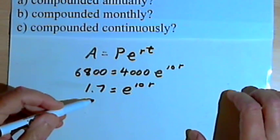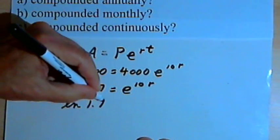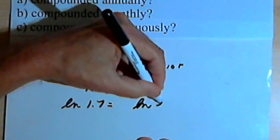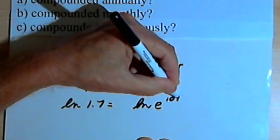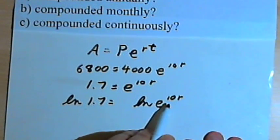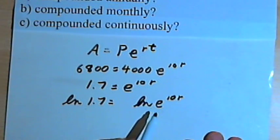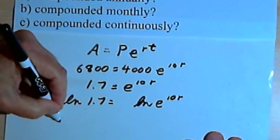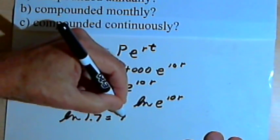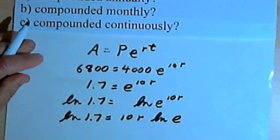Now we'll take the natural logs. So we're going to have ln, the natural log of 1.7 equals the natural log of e raised to the 10r. I can take this exponent, the 10r, and using the exponent rule that I have for logarithms, make that into a coefficient.